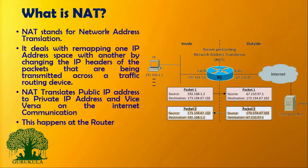NAT is generally abbreviated as Network Address Translation, which is basically used to translate public IP addresses to private IP addresses and vice versa. We know that the IP addresses your system has are what we call private IP addresses, and these private IP addresses are not routable when they enter into the public network, which is outside your home network.